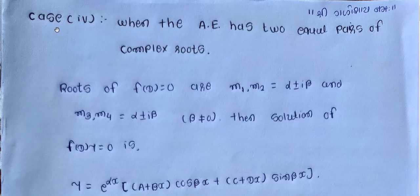Hello students, today we start the next lecture of unit 4, case number 4: when the auxiliary equation has two equal pairs of complex roots.